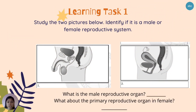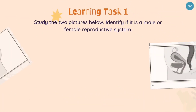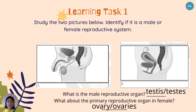For our first learning task, study the two pictures and identify if it is a male or female reproductive system. What is the male reproductive organ? What about the primary reproductive organ in female? The correct answers: the male reproductive system's primary organ is testes, and the female reproductive organ is ovary or ovaries.